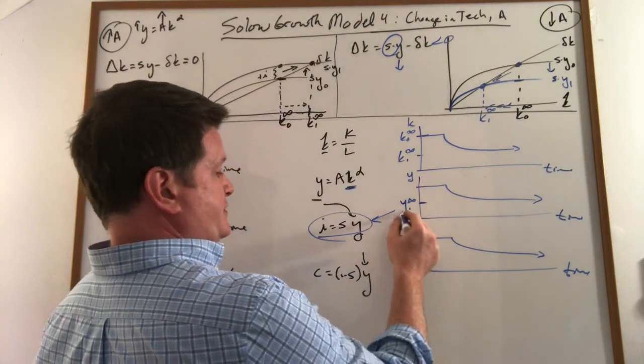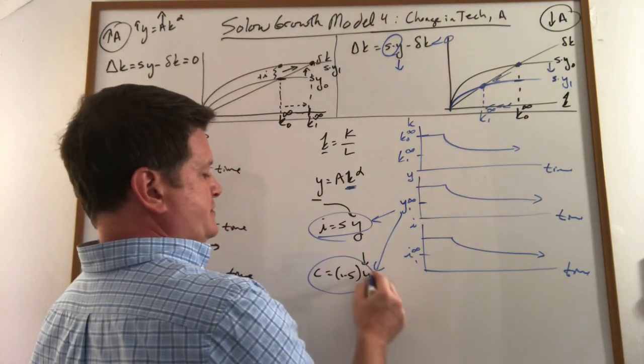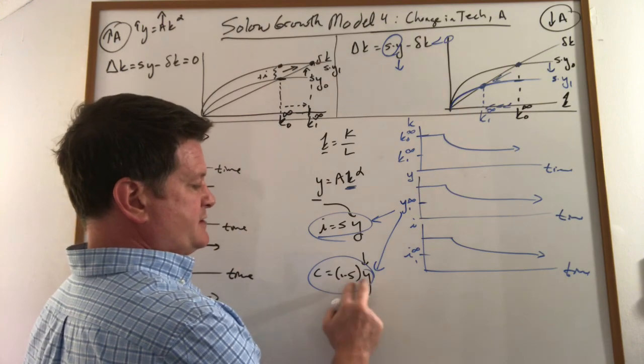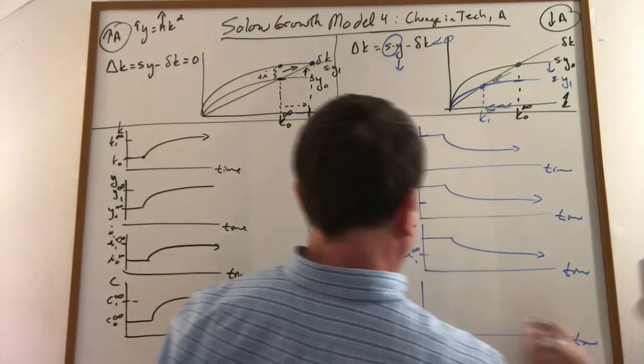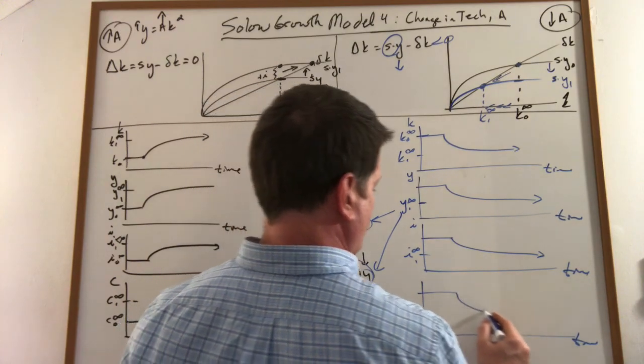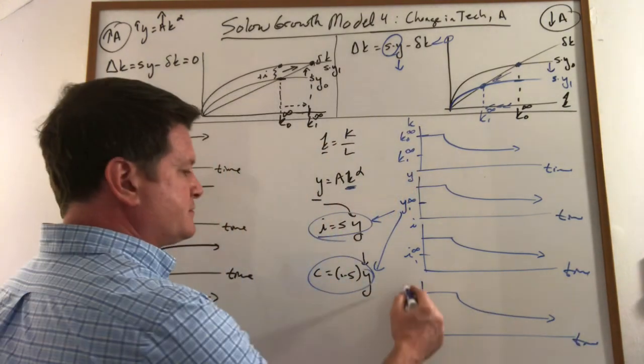Because I know what happens to GDP, I also know what happens to consumption. This is constant, so it just follows this. And it looks like those as well.